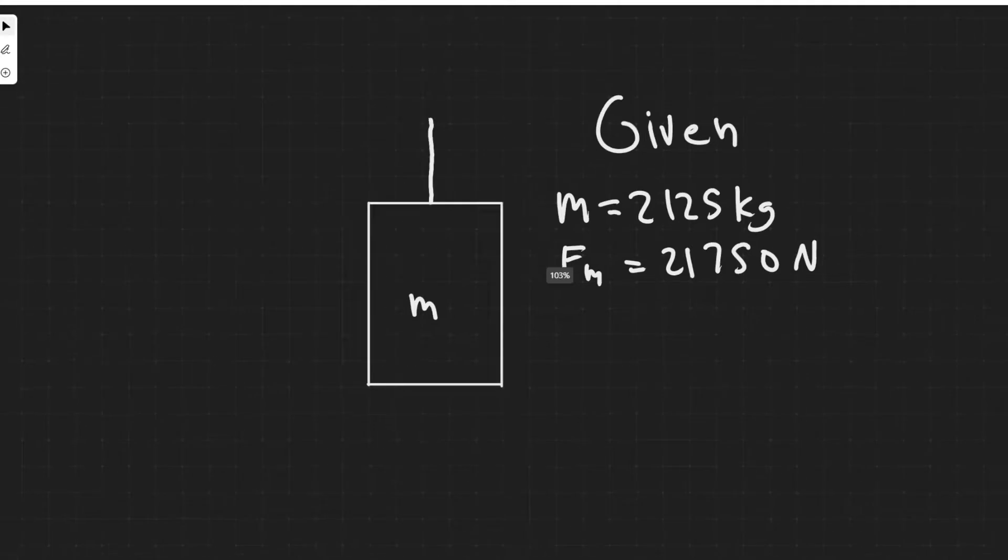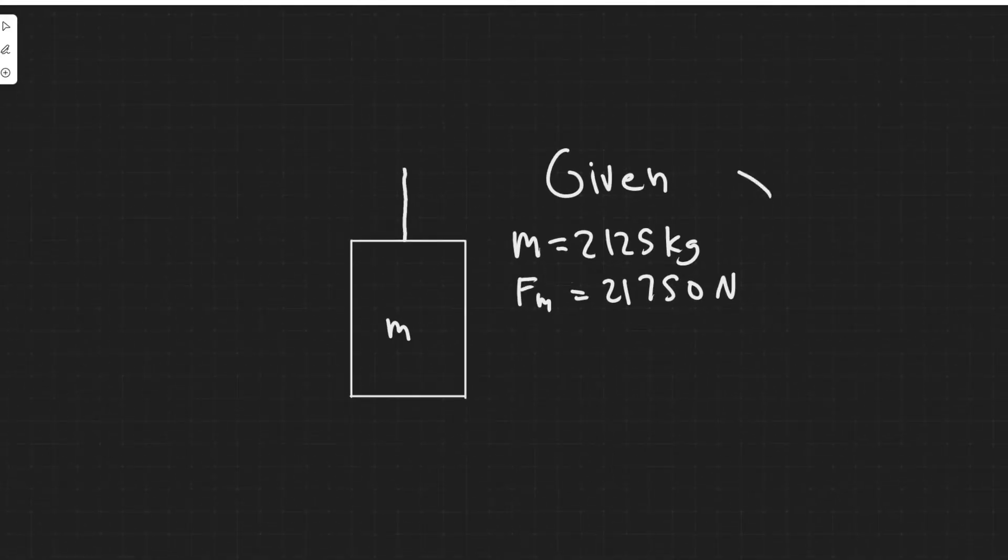In this problem we're given two things: the mass of the elevator which is 2,125 kg, and the maximum strength of the cable, which is 21,750 newtons.